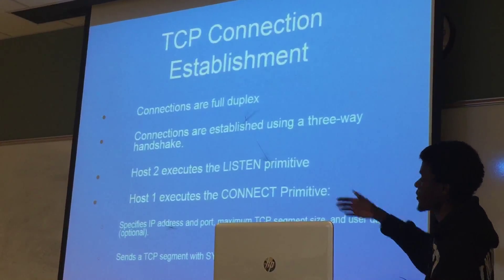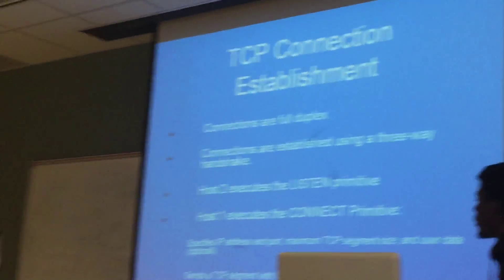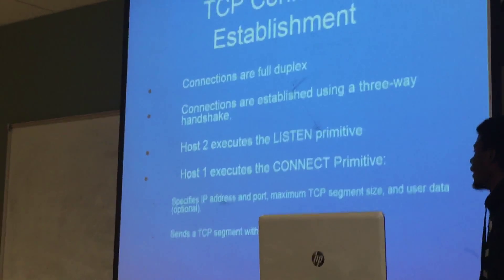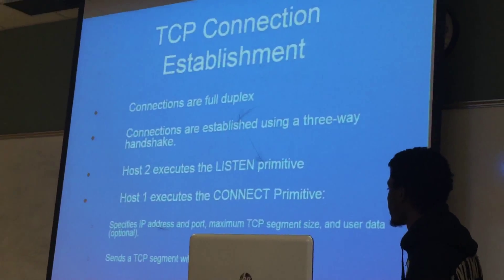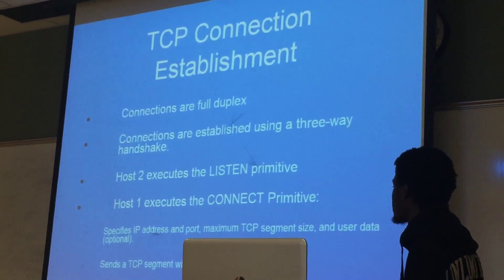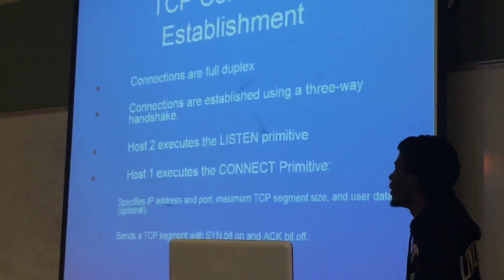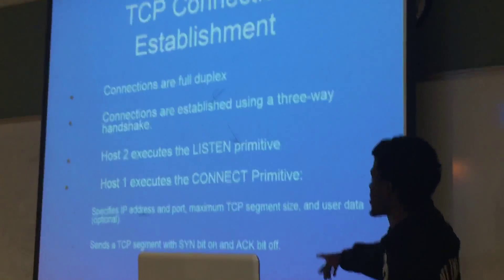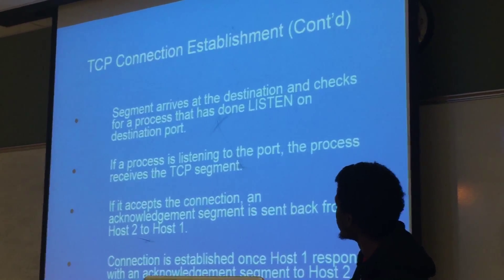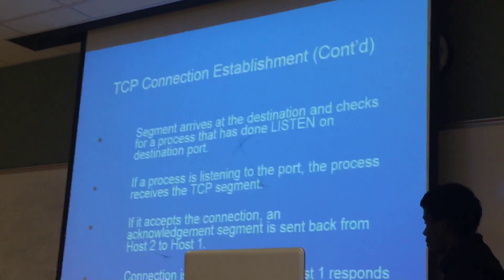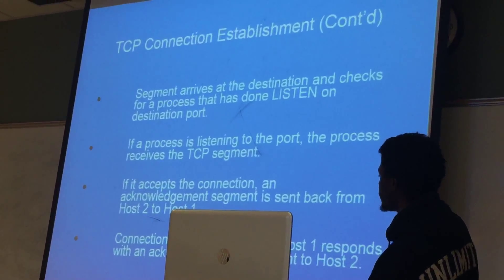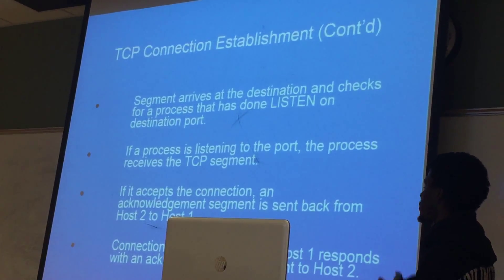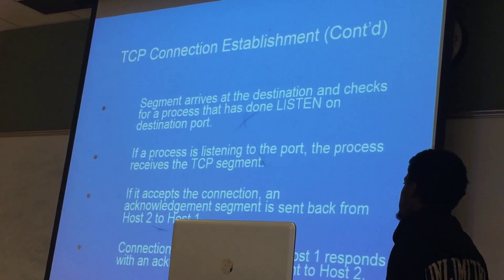Host 2 executes a listen, which means one of the processes is passively awaiting a request to connect. Then host 1 executes a connect, where it specifies the IP address and port it wants to connect to, the maximum TCP segment size, and user data, which could be like a password. It then sends a TCP segment with SYN and ACK on. If there is a process listening at the port at the receiver's end, then host 2 will accept the segment and reply with its own acknowledgement segment back, which will officially establish the connection.